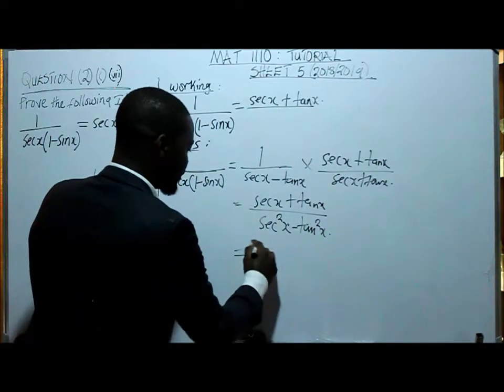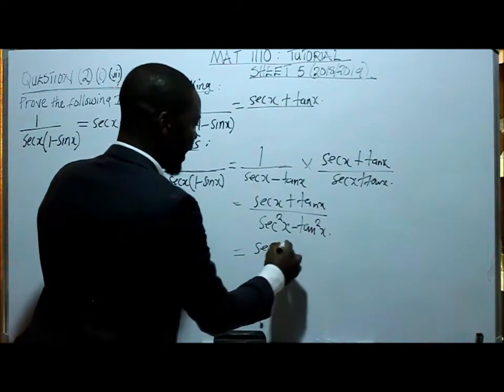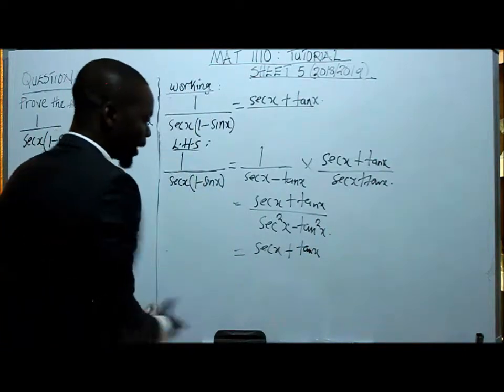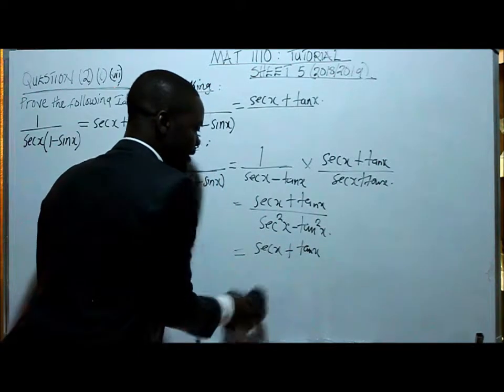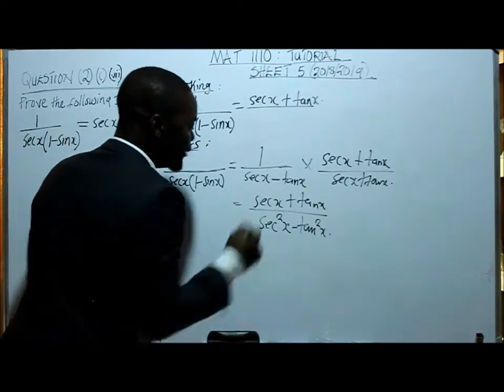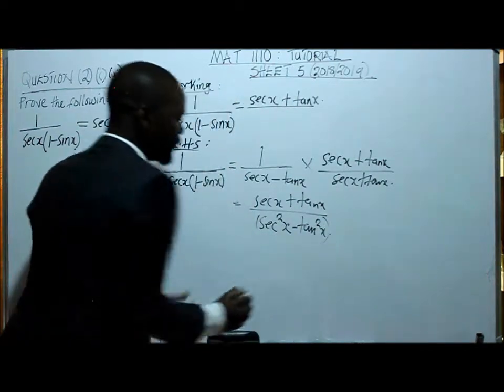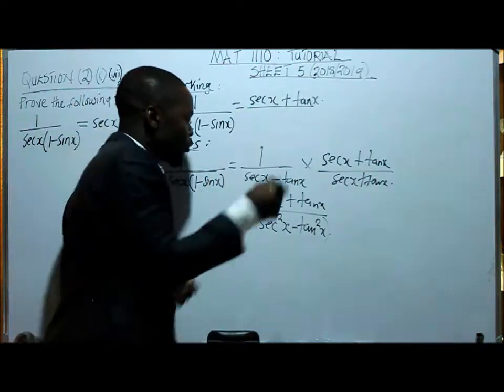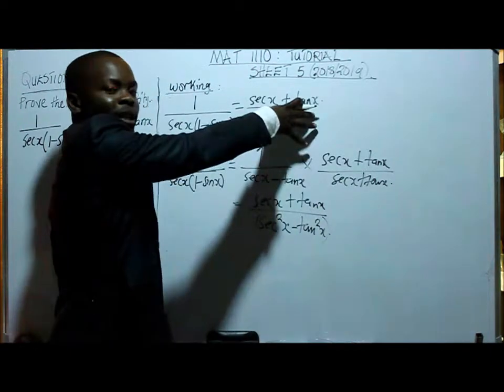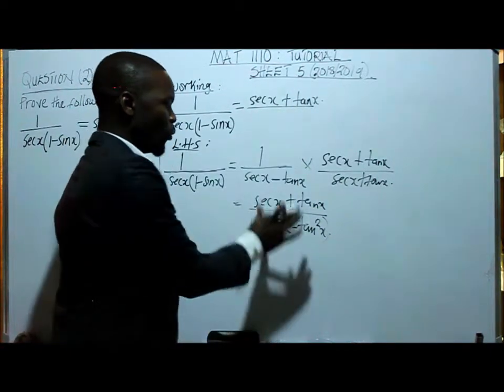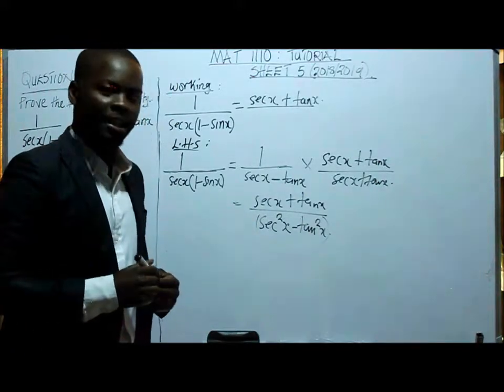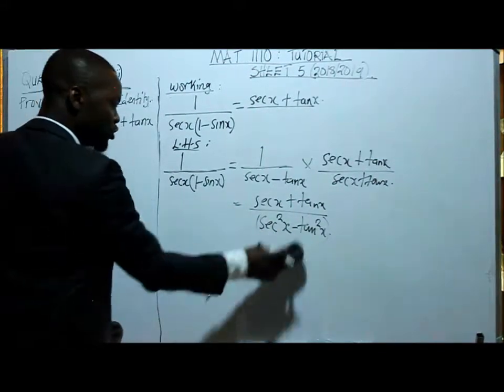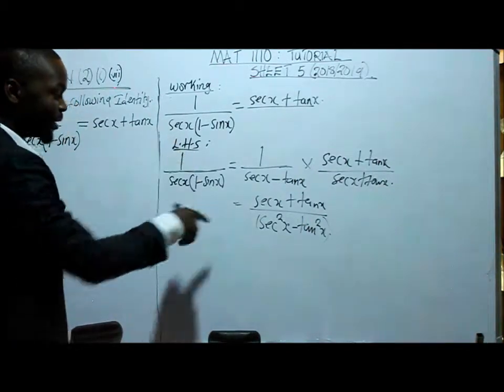This difference of two squares can be expressed as we have got sec x plus tan x over... What I'm going to do is this: let me first simplify the denominator, this component of the denominator. Because, as I said, you must refer to your right hand side. We have got this numerator here, which is the same component here. But what is the denominator? Let's check what the denominator is. Let me take the component of the denominator alone and show you that this denominator is actually one.